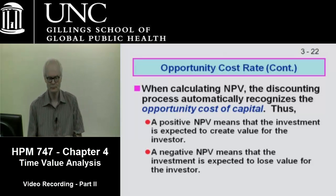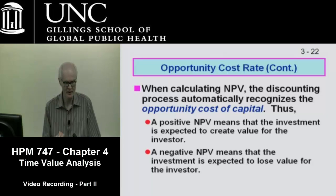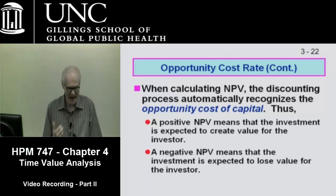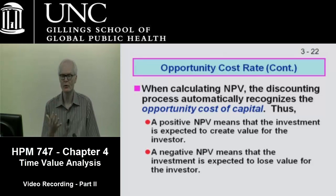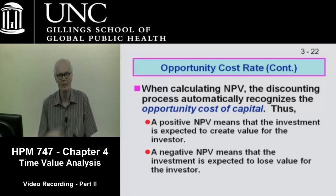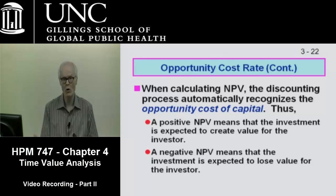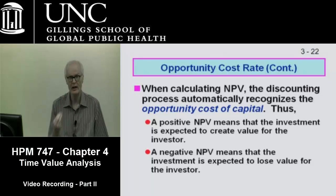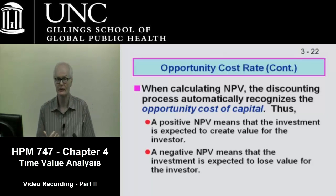A positive NPV of $78 means the value of the organization goes up by $78 if it makes that investment. A positive NPV means the investment is expected to create value; a negative NPV means it will lose value. Healthcare organizations want to choose investments with positive NPVs. Even not-for-profits must have more NPV-positive projects than negative ones — you cannot run only negative-NPV projects meeting community need, because that is a path to bankruptcy.